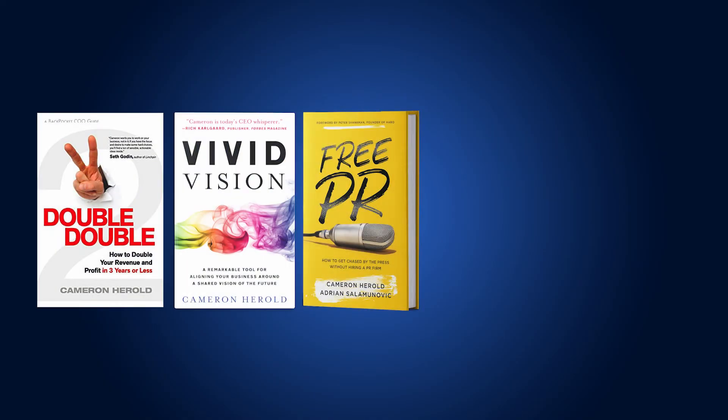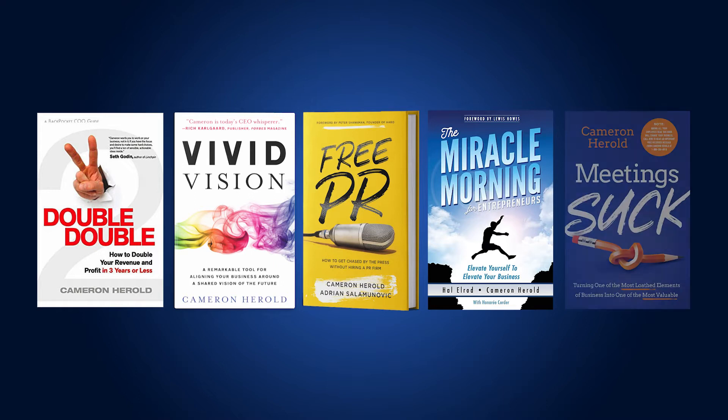Unlike any other book I've ever launched, because in the past, I've launched five other books: Double Double, Vivid Vision, Free PR, The Miracle Morning for Entrepreneurs, and Meetings Suck. And they're all great books. They all make great money. They all sell really well, but I never really put any big marketing behind it. And we're really putting a big thrust. So that's my big strategic focus for the COO Alliance this year.